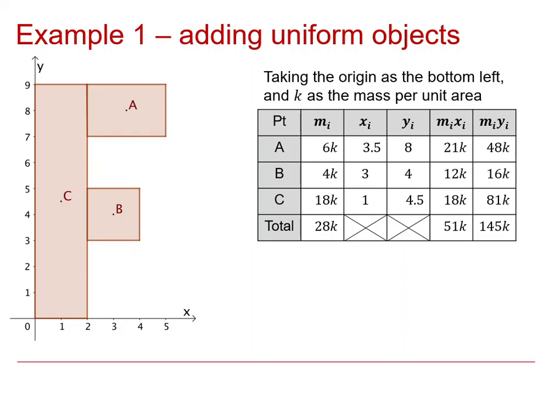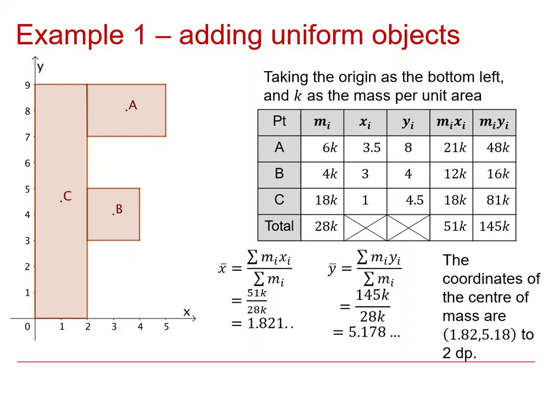So then we do the totals in the usual way, getting bigger numbers this time. 145K for that sum, and 51 for this, and 28 easily enough for the masses. So we're now talking about a composite body with a mass of 28K. So we do the usual thing, we divide the 51 by the 28K to get the x-bar, and fairly typically in this kind of calculation the Ks cancel out. That applies if you're using a uniform material for all the parts, it wouldn't apply otherwise. There's the y value calculated in the same way, and we round that to give an answer to the question in context with the two decimal places accuracy.